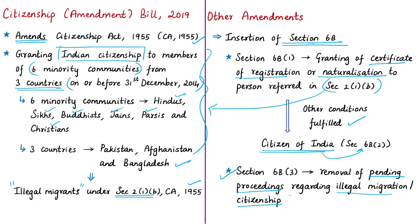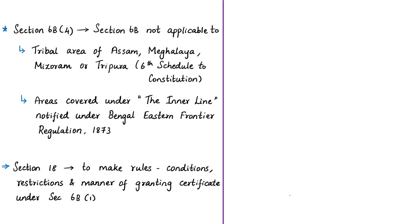Another important provision inserted by this amendment is clause 4, which states that Section 6B and its clauses shall not apply to the tribal areas of Assam, Meghalaya, Mizoram, or Tripura as provided per the Sixth Schedule to the Constitution. Article 244 under Part 10 of the Constitution envisages a special system of administration for scheduled areas and tribal areas.